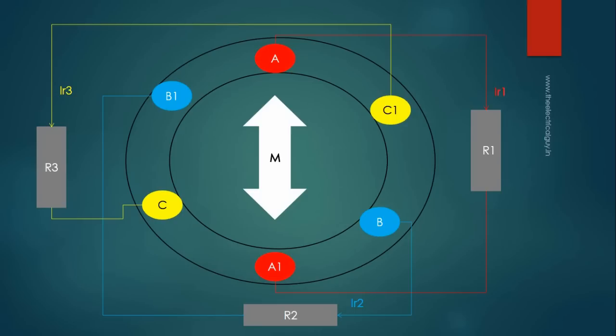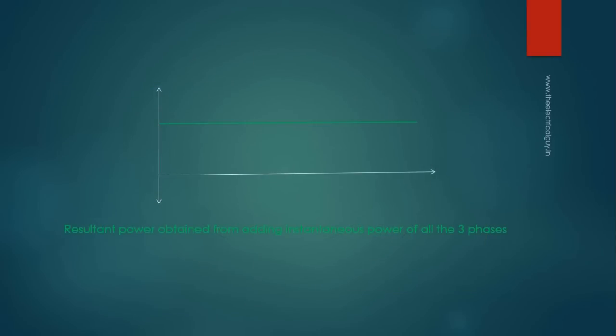Again doing the same procedure we did for two-phase generator, we will find that the power output we are getting by adding the instantaneous power of all three phases is constant and it is 1.5 times the peak power of one phase. So here we have achieved constant and more power by simply adding two extra windings to single-phase generator. And this is the reason why three-phase power is more preferred over single-phase power.